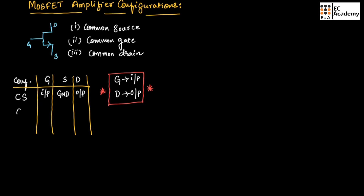In common gate configuration, gate is connected to ground. The two remaining terminals are source and drain. Since drain terminal is preferred as output, drain is considered as the output and source is considered as the input side.